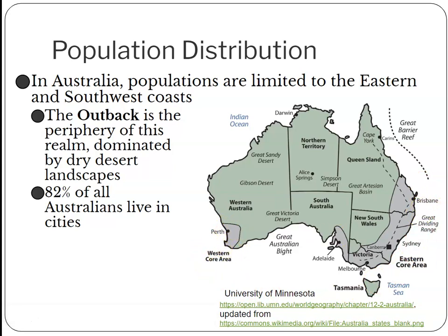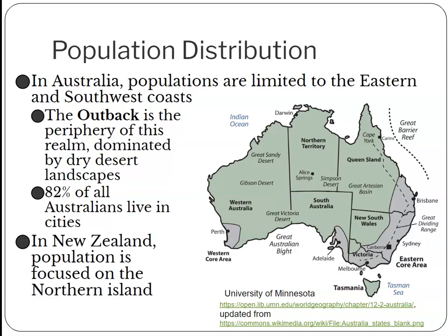82% of all Australians live in cities, and those cities are overwhelmingly focused on the coasts — which have less of that desert climate and benefit from the moderating influence of the ocean, giving them more temperate, milder temperatures. In New Zealand, humans are more focused on the North Island because the Southern Alps on the South Island make it much more mountainous and harder to live in. Though there are still major cities in the south, the population is more concentrated in the north.